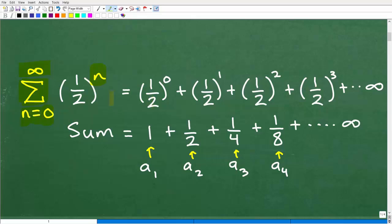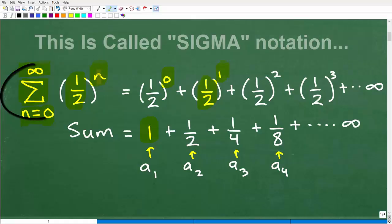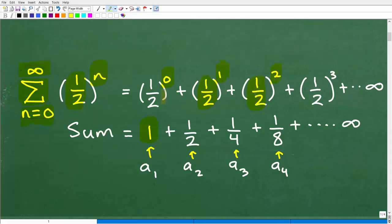Let's start with n equals zero. Take this one-half and plug zero up there. Anything to the zero power is one. Let's move on and index up to n equals one. This becomes one-half to the first power. We replace this n with one, and then go to the next number, that's two. So that becomes one-half squared.